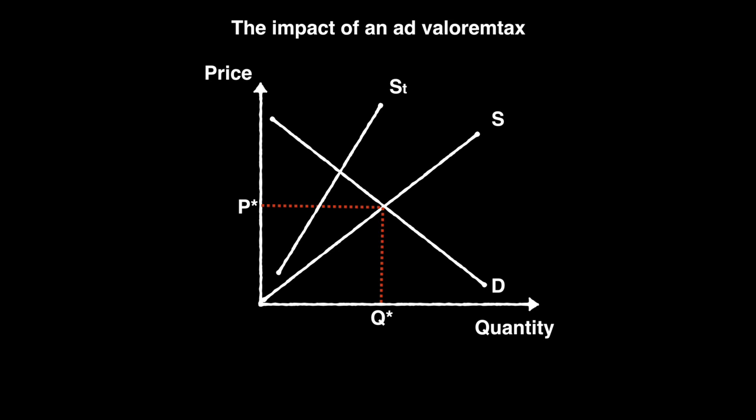To understand why the distance grows bigger with an ad valorem tax, consider the difference between $1 and 20% of that $1. The distance is not much, about $0.20. But if you sell $10,000 worth of goods, 20% is a much more significant difference, about $2,000. As the value of goods rises, so does the value of the tax.